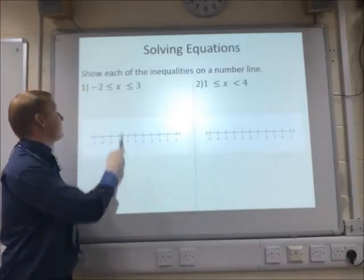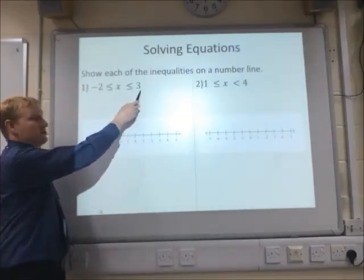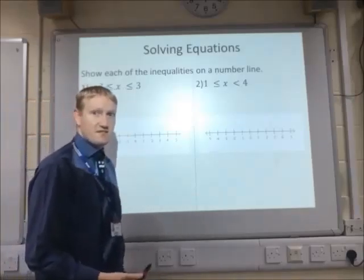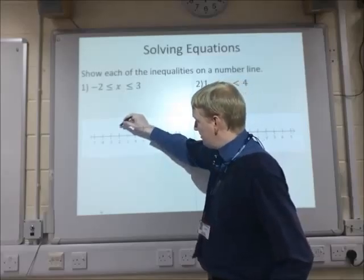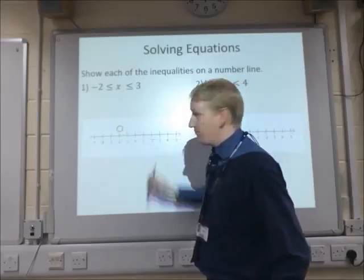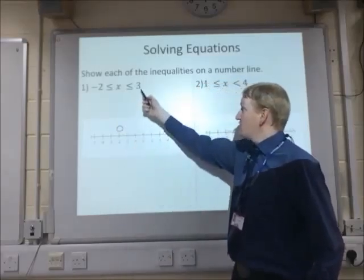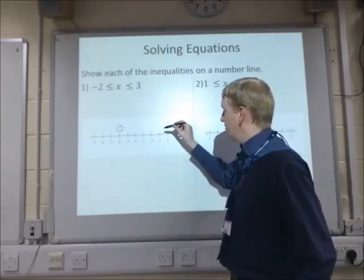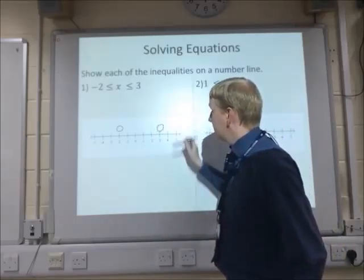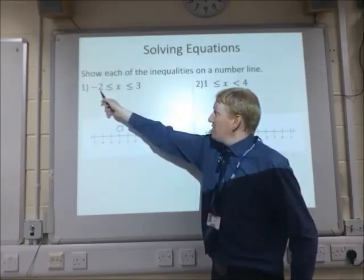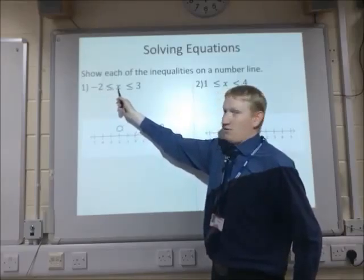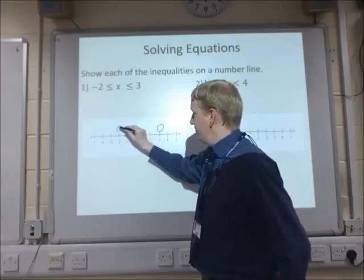For the first example, I'm going to show numbers between -2 and 3. So the first thing to do, at -2, we're going to draw a circle on the number line. And then we're going to draw another circle at the number 3. Because here it says that -2 is less than or equal to x, we color the circle in.